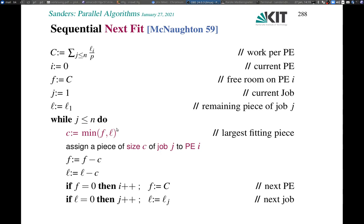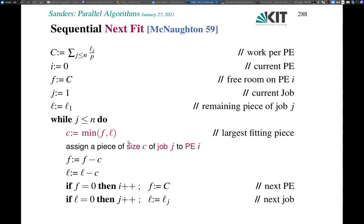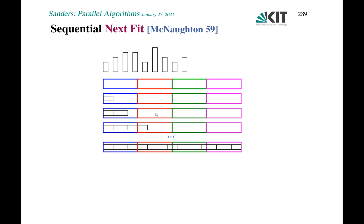This sounds inherently sequential. However, this is quite close to a prefix sum problem. Basically the starting position of the j-th job is the prefix sum over the previous job sizes. The only complication is that there may be very big jobs that span several processors, so I want to go into a little more detail on how to actually implement this.